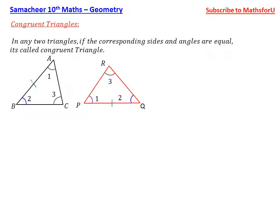Automatically, the sides are the same. So AB corresponds to PQ, BC corresponds to RQ, and AC corresponds to PR. So the corresponding sides and angles are equal.